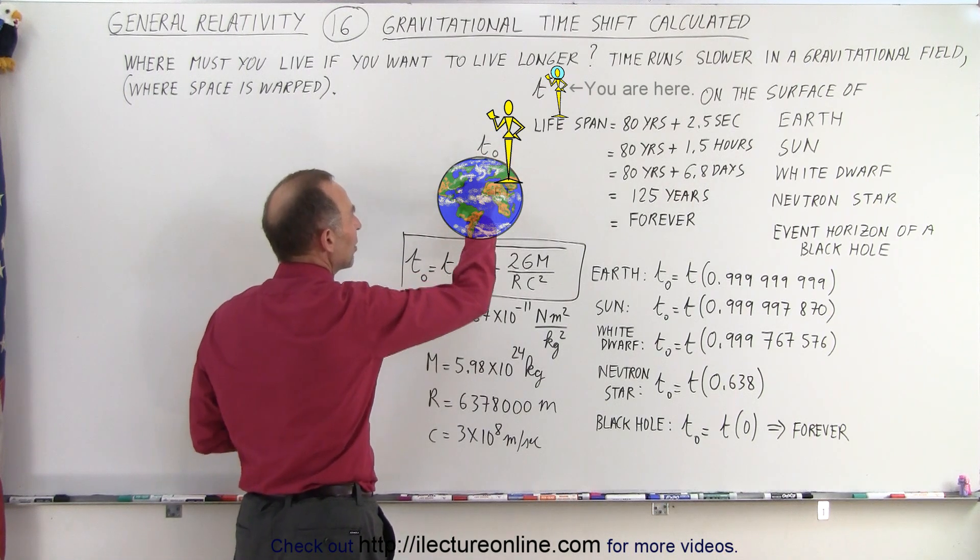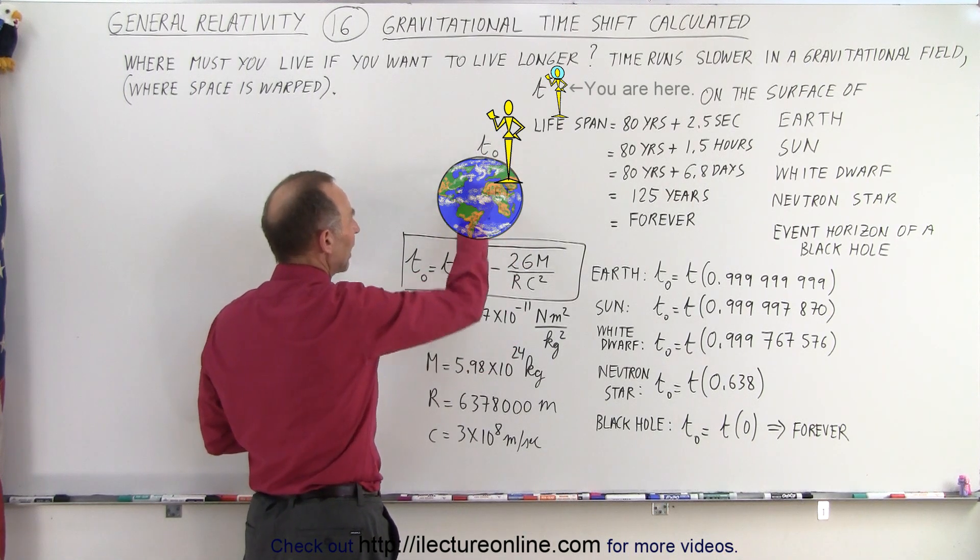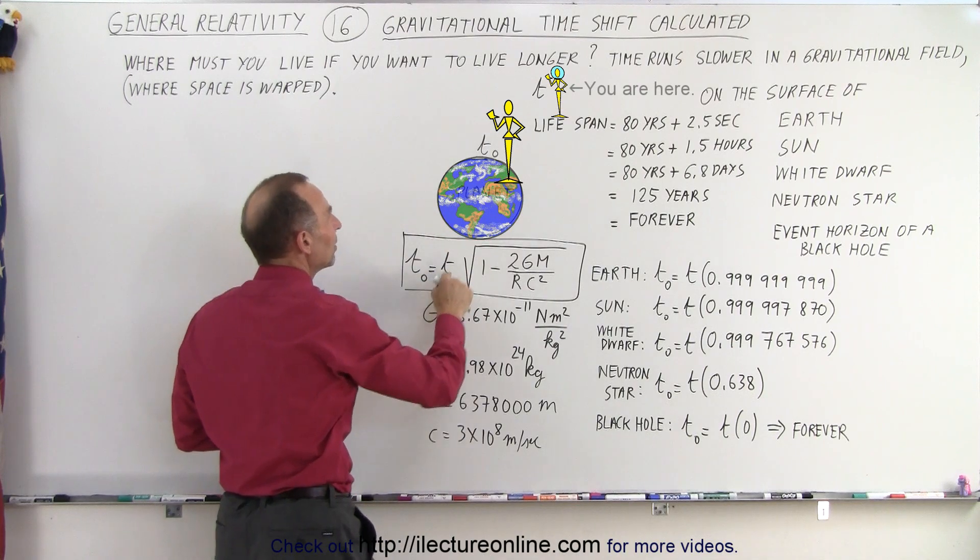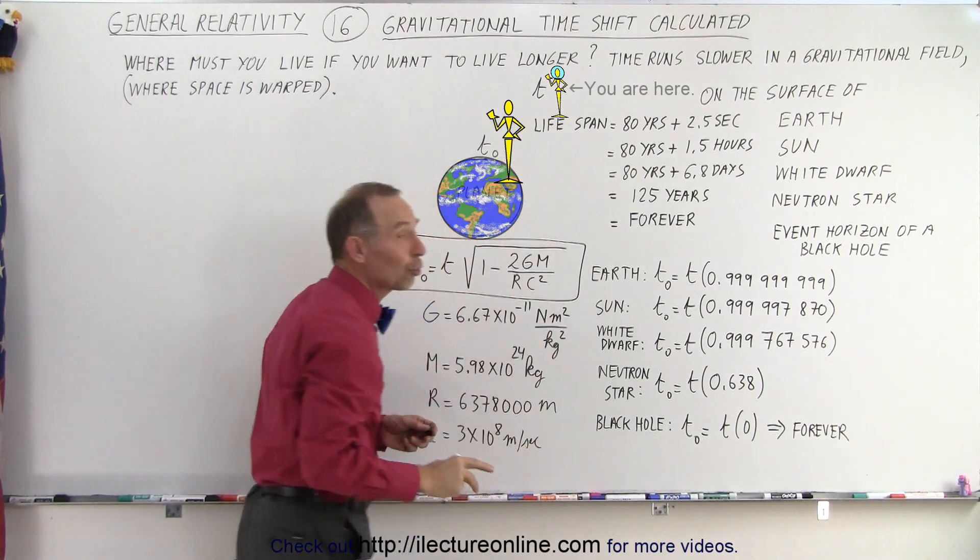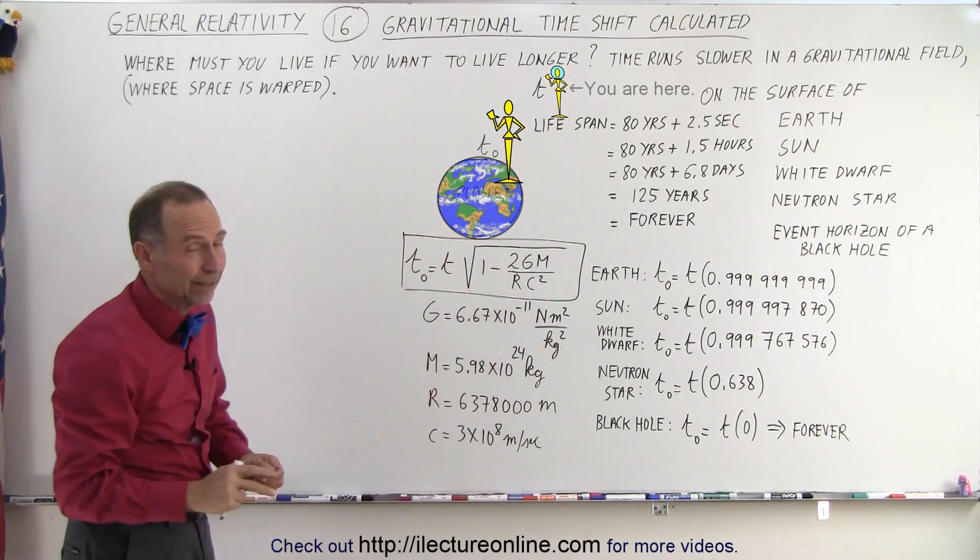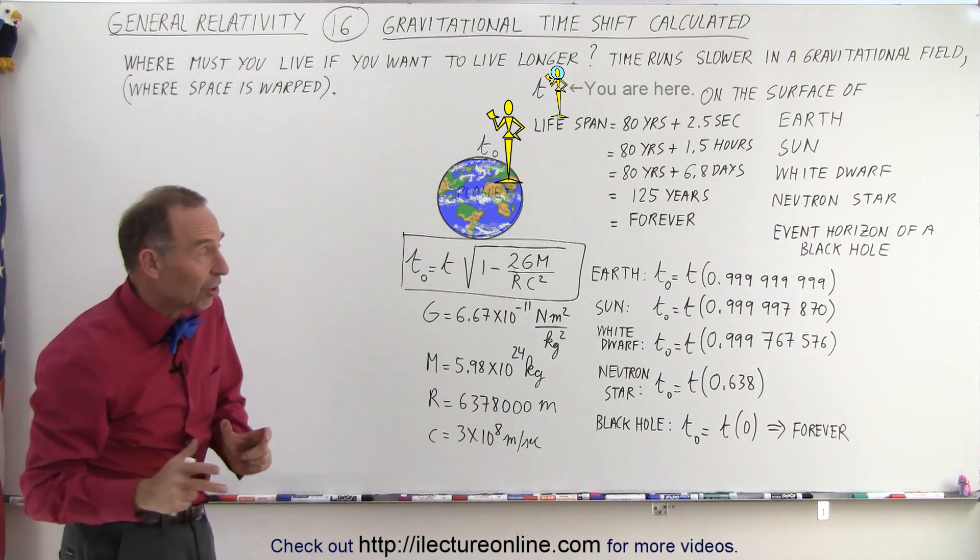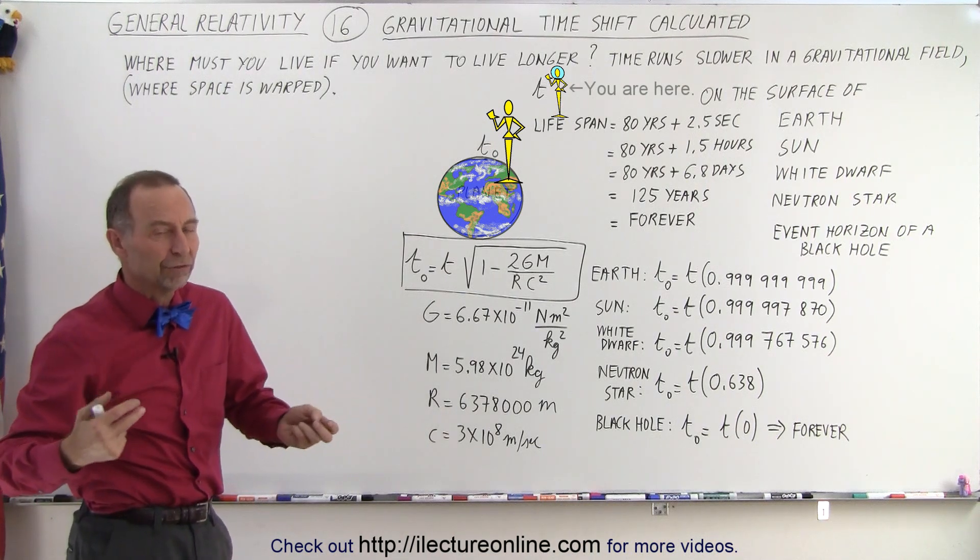t-sub-naught is on the surface of the planet, t is far away from the planet where there's no gravitational influence. Again, it's the warping of space that's causing this, not the gravitational field per se.